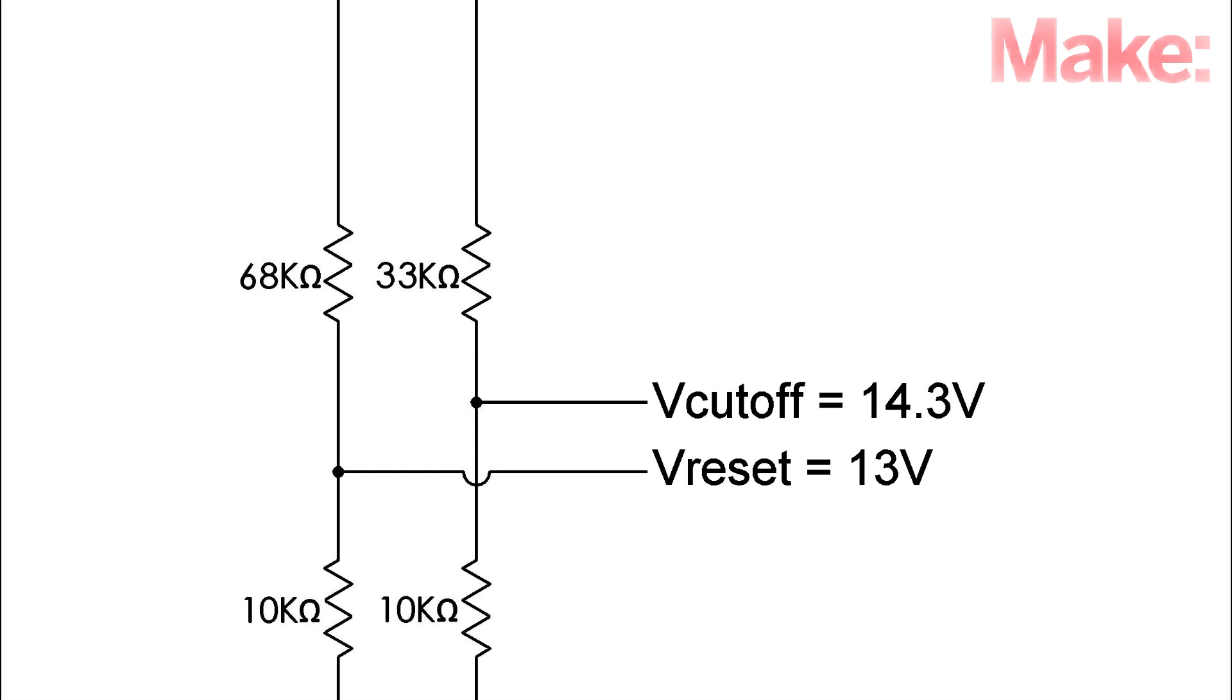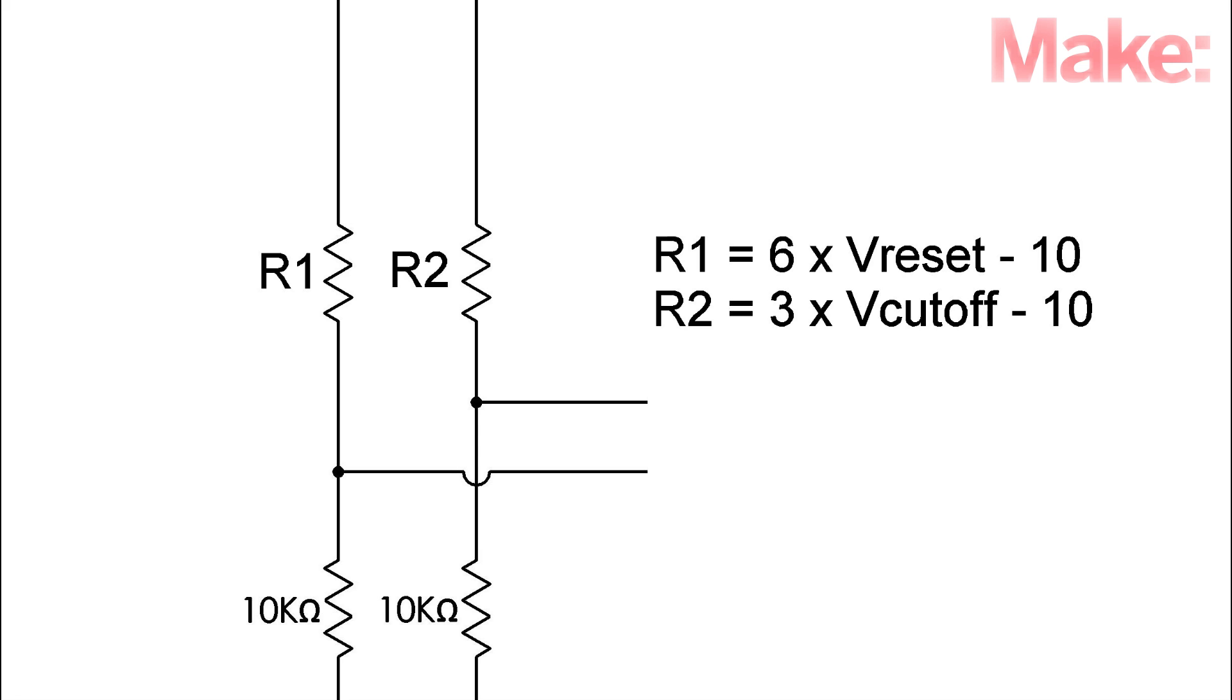The operating range of the charger is set by the values of the resistors. These values work for a 12 volt battery, but you can easily change the resistors to match your battery.